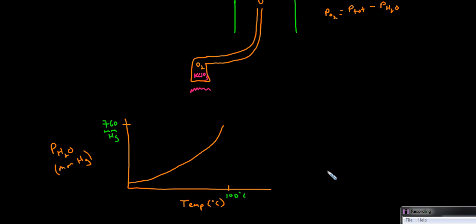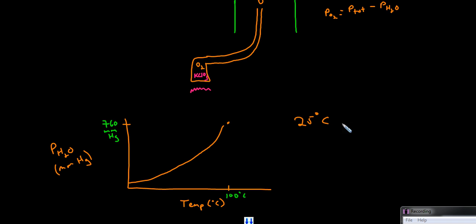Sometimes you'll need to look through data tables to find the partial pressure of water for a given temperature. As temperature increases, the partial pressure of water increases. For example, when the temperature rises to 100 degrees Celsius, the partial pressure of water increases to 760 millimeters of mercury. Most frequently, at 25 degrees Celsius, the partial pressure of water is 23.76 millimeters of mercury — that's the partial pressure of water at room temperature.